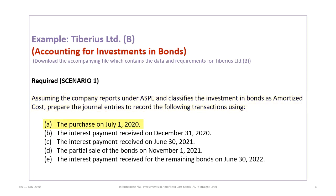The first will be to record the purchase of the bonds on July 1, then the interest payment received on December 31, 2020, then the next interest payment received on June 30, 2021. We will then record the partial sale of the bonds on November 1, 2021, and then the interest payment to be received for the remaining bonds on June 30, 2022. We'll also have to do the interest payment at December 31, 2021.